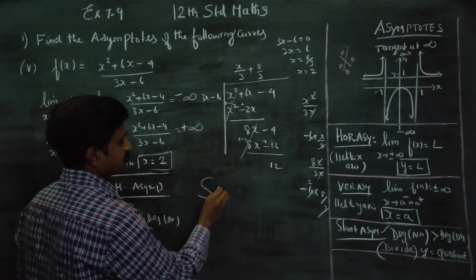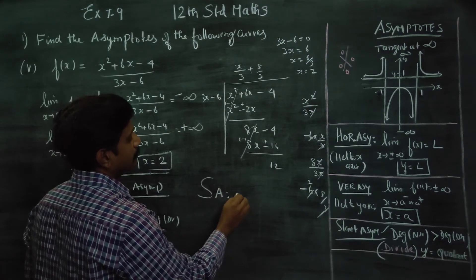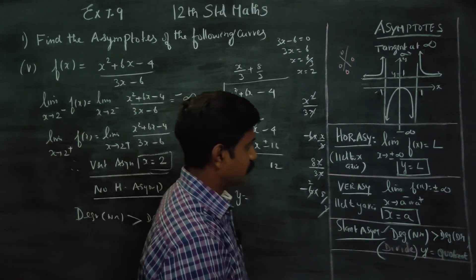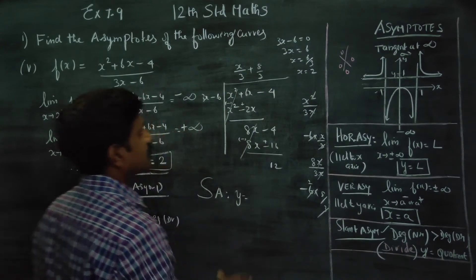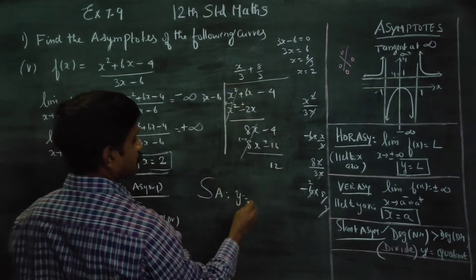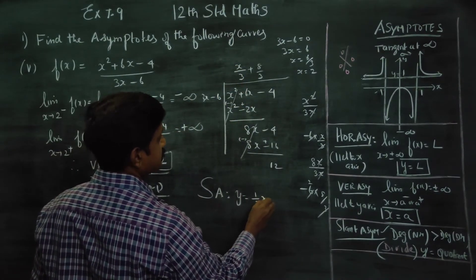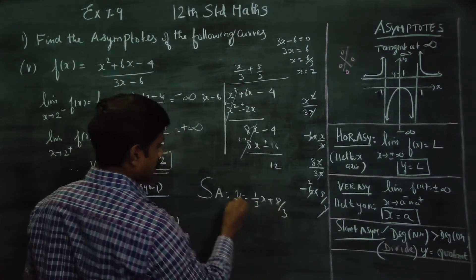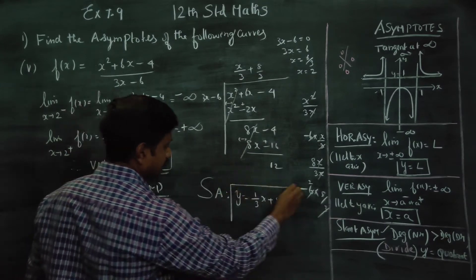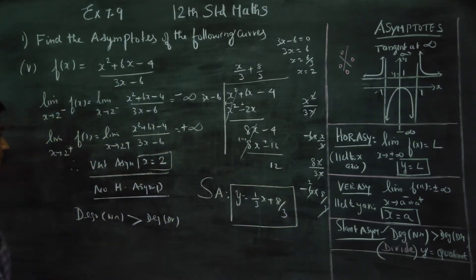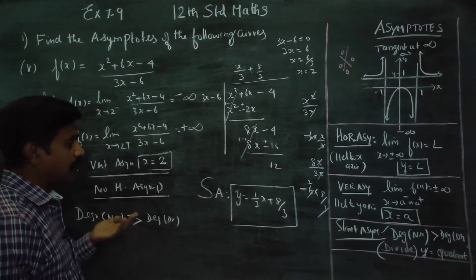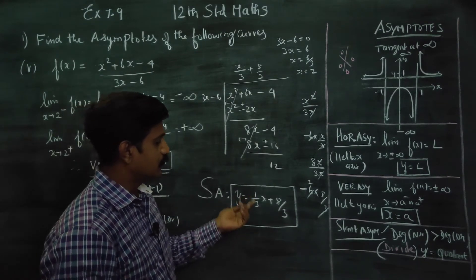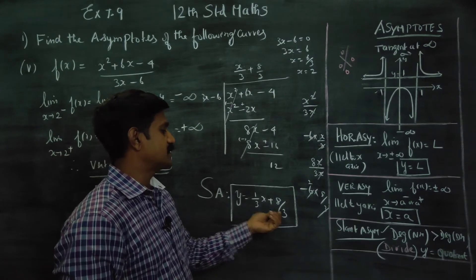Therefore, our slant asymptote will be y equal to the quotient. The quotient gives us y = (1/3)x + 8/3 as our slant asymptote. So our vertical asymptote is x = 2, there is no horizontal asymptote, and the slant asymptote is y = (1/3)x + 8/3.